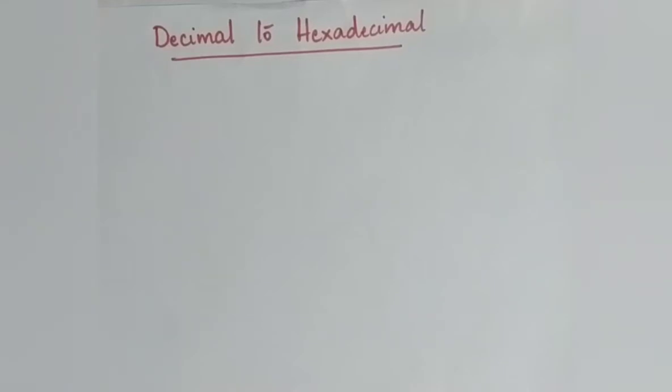So, every decimal to hexadecimal conversion, the decimal number is repeated or divided by the number 16.